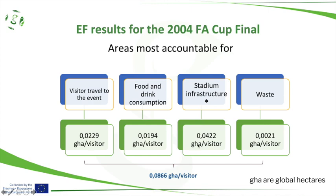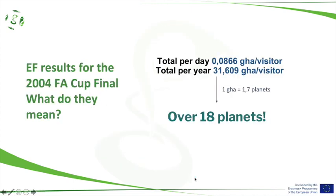The big takeaway is that there were 0.06 to 0.07 global hectares per visitor for one day. If the year has 350 days and one global hectare equals 1.7 planets, we would need over 18 planets if everyone in the world went to a sport event like the 2004 FA Cup Final every day. Of course no one does that every day, but it puts things into perspective.